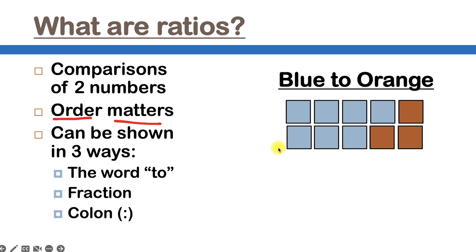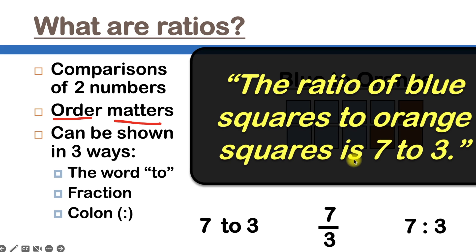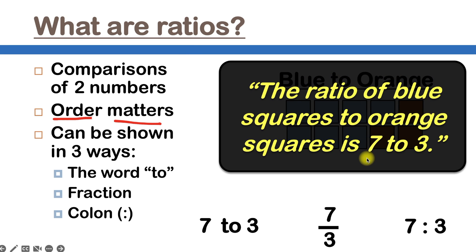Let's go over why that's the answer. The number of blue squares is seven, and that'll be the first number in our ratio. Then we'll write in the word 'to,' and then we'll write in the number of orange squares, which is three. So we'll put that right after the word 'to.' The second way to write it is as a fraction — seven over three. And finally, we'll write it using a colon as seven colon three. Even though there are three ways to write the ratio, there's only one way to read it: the ratio of blue squares to orange squares is seven to three.